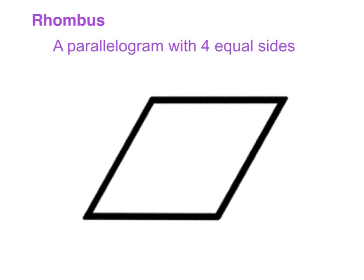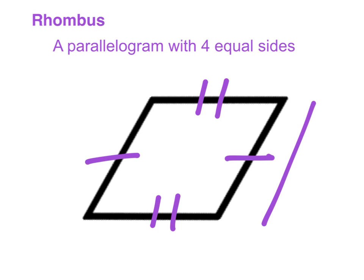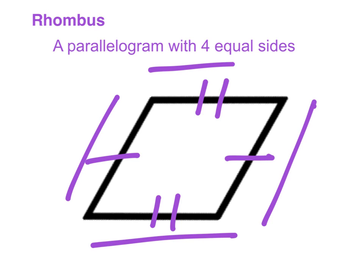A rhombus is simply a parallelogram with four equal sides. So this side and this side are parallel to each other, and the top and the bottom as well. But this side and this side are the same length, along with this side and this side. Pretty simple.